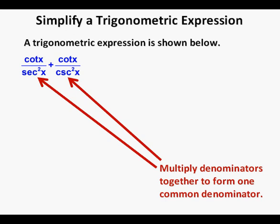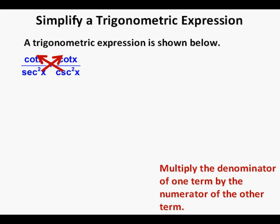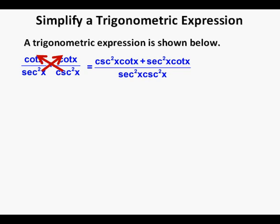In this second method we're going to take the two denominators of each term and multiply them together to form one common denominator. In order to use the common denominator, we need to multiply the cosecant squared x in the denominator of the second term by the cotangent x in the first term's numerator, and multiply the secant squared x from the first term's denominator by the cotangent x in the second term's numerator — kind of like cross multiplying. So we have: cosecant squared x times cotangent x plus secant squared x times cotangent x, over secant squared x times cosecant squared x. Next we factor cotangent x out of each term in the numerator, giving cotangent x times the quantity cosecant squared x plus secant squared x, over secant squared x cosecant squared x.